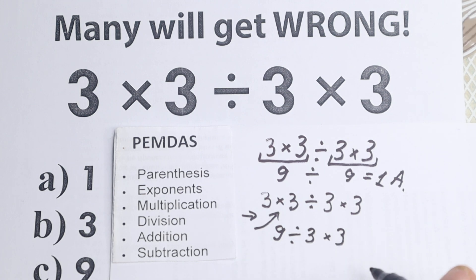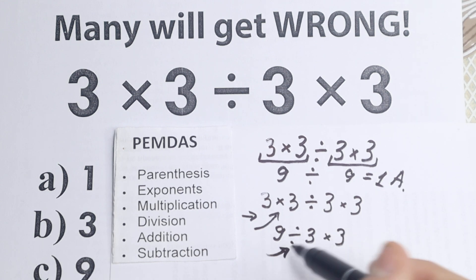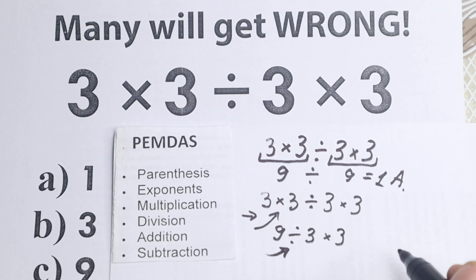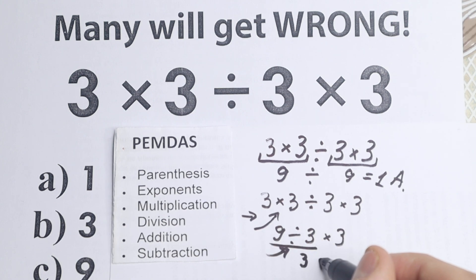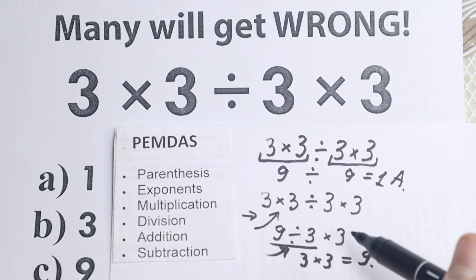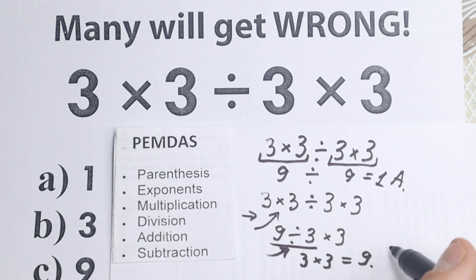We still have division and multiplication part. So what is the first sign from left to right? We need to scan. Right here we have division. So we need to divide. Doesn't matter multiplication division, we need to go from left to right. So let's divide: 9 divided by 3 equal to 3. And we still have 3 in the end with this one. So 3 times 3 equal to 9. As you can see, according to PEMDAS order, we have option C.